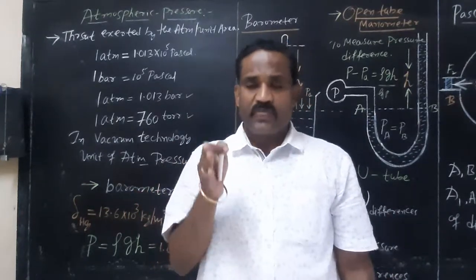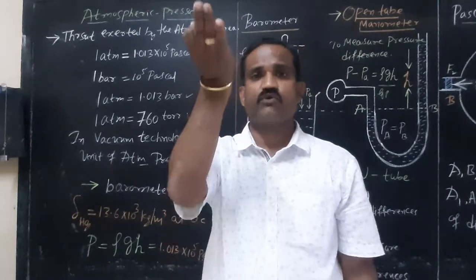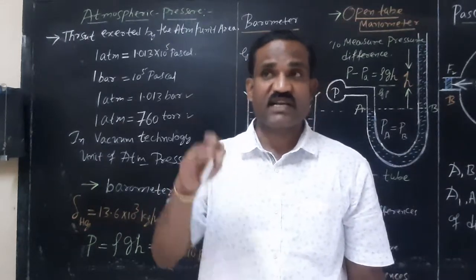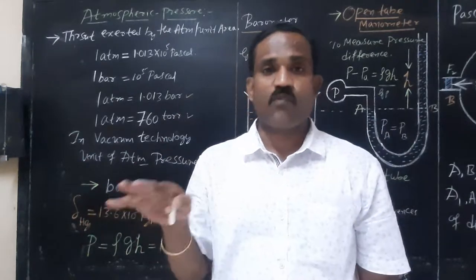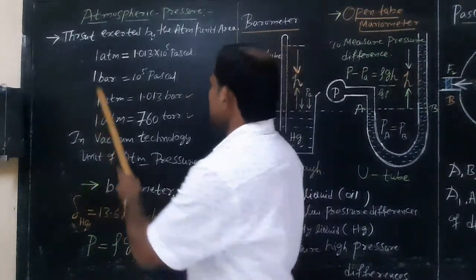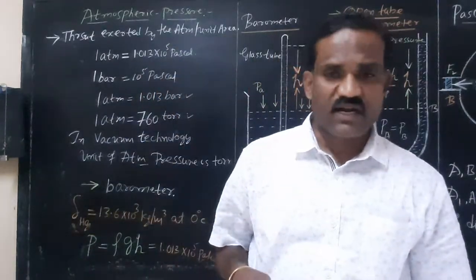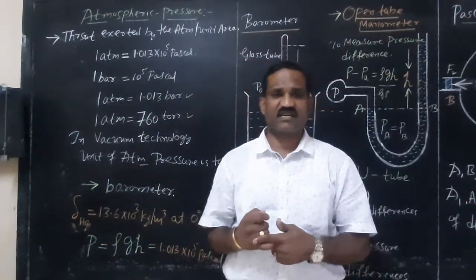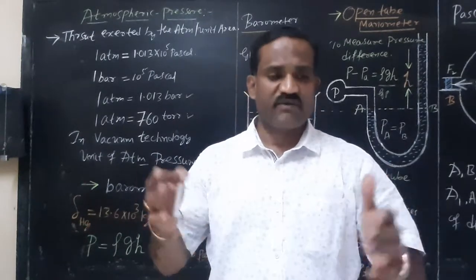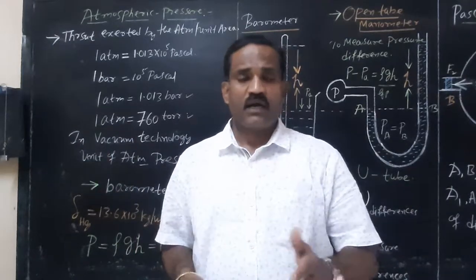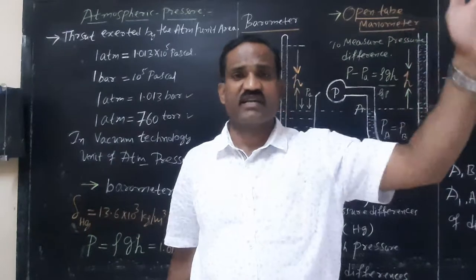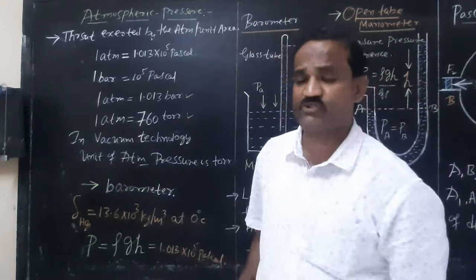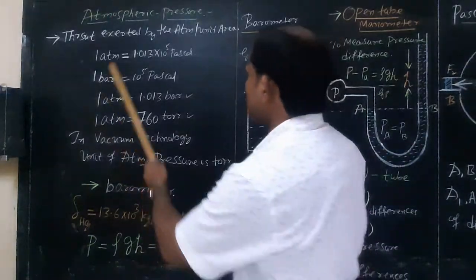Atmospheric pressure is measured in terms of the height of mercury that rises in a tube — calibrated by a device called a barometer placed at sea level. The atmosphere consists of a mixture of gases including oxygen, nitrogen, carbon dioxide, and some inert gases. The density of the atmosphere is more at the surface of the earth and decreases as you move away.